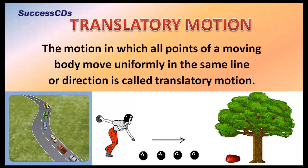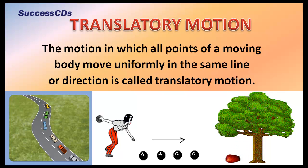Motion can be of many types. The motion in which all points of a moving body move uniformly in the same line or direction is called translatory motion. Examples include a moving car, a moving ball, and a falling apple.